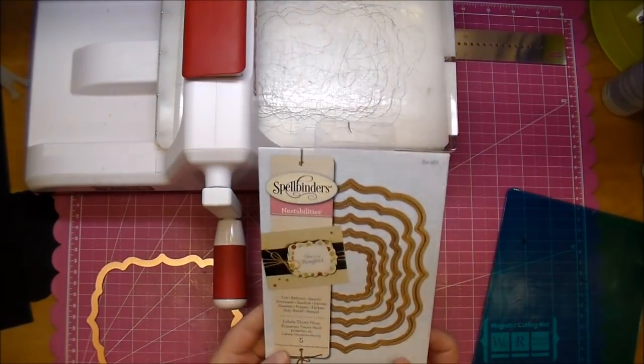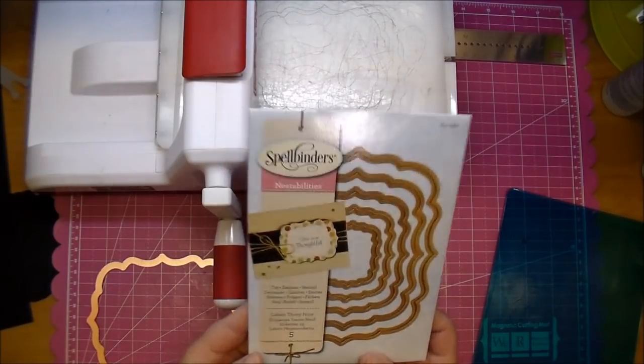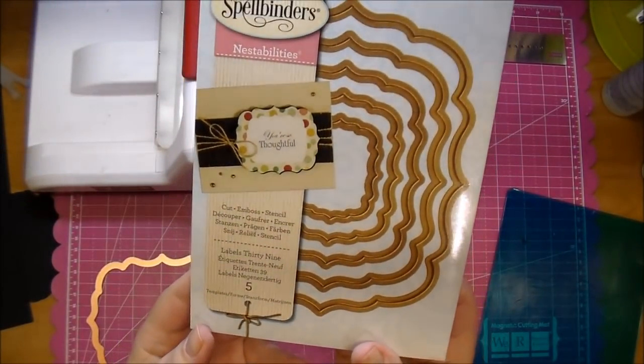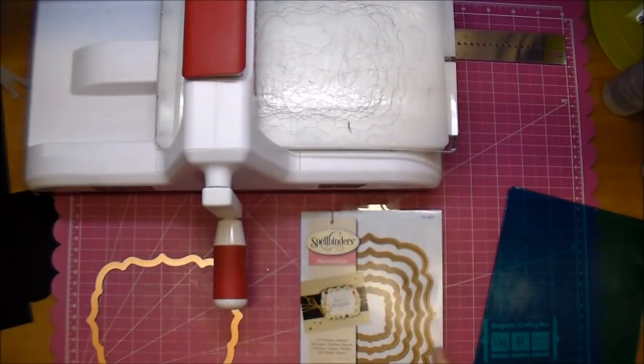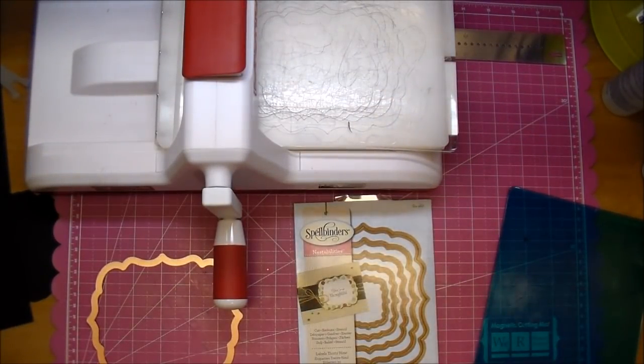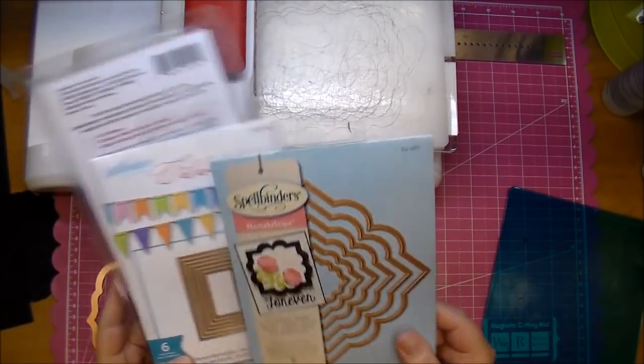So today for an example, I am going to be using the Spellbinders Nestabilities Labels 39 die, and you can pretty much use any die that has a solid edge. So another example would be the Labels 49 die.